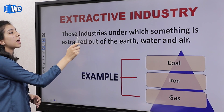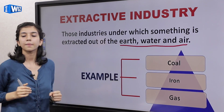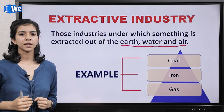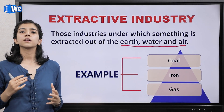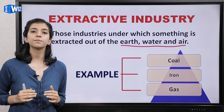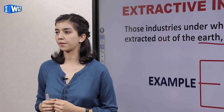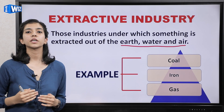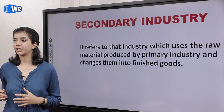Now comes the question: what are extractive industries? Those industries under which something is extracted out of earth, water, and air — here we have to extract our natural resources. For example, when coal is mined — as illegal mining cases we get to hear very much — coal comes from the earth through extracting units, extracting firms — that is extractive industry.